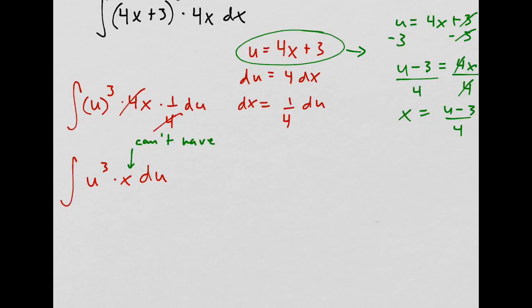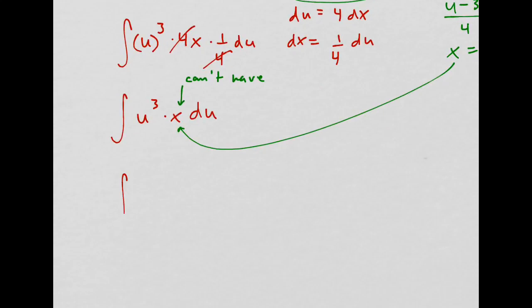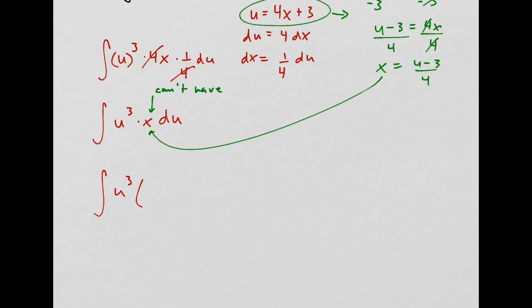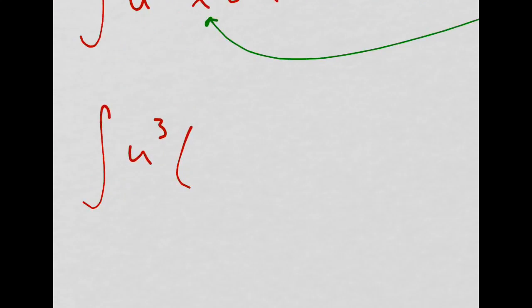All right. So that's what I'm going to put in for x there. So I have the integral u to the third times x is just u minus 3 over 4. u minus 3 all over 4.